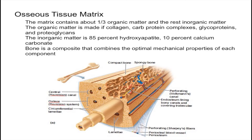In this video I'm going to talk about the osseous tissue matrix. The matrix of osseous tissue contains about a third of organic matter and the other two-thirds is composed of inorganic matter. The organic matter consists of collagen and carbohydrate-protein complexes, for example glycosaminoglycans, also known as GAGs.